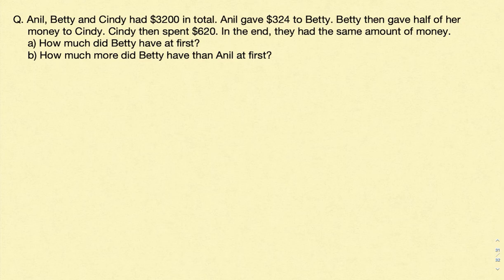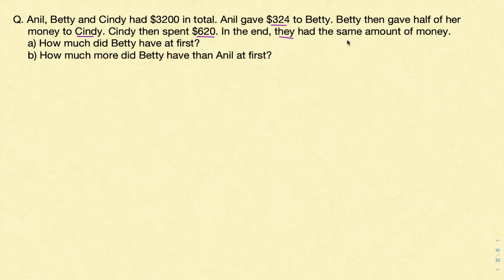Anil, Betty and Cindy had $3,200 in total. Anil gave $324 to Betty. Betty then gave half of her money to Cindy. Cindy then spent $320. In the end, they all had the same amount of money. Part A of the question is how much did Betty have at first, and Part B is how much more did Betty have than Anil at first.